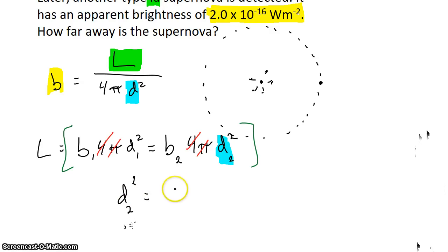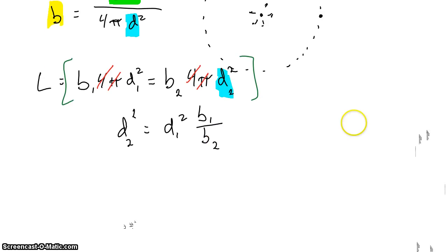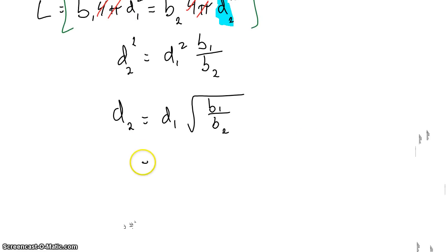So d₂² = d₁² · (b₁/b₂). We'll take the square root of both sides, and that will give us d₂ = d₁ · √(b₁/b₂), the ratio of the apparent brightnesses of the two stars. And we know everything on the right-hand side of this equation now.